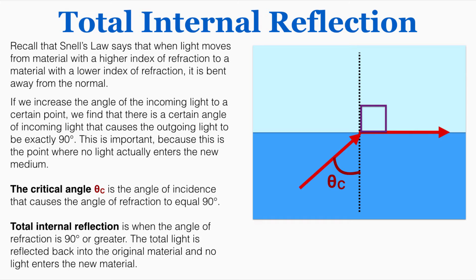Total internal reflection is when the angle of refraction is 90 degrees or greater. The total light is reflected back into the original material and no light enters the new material. It's just staying within the old material here.